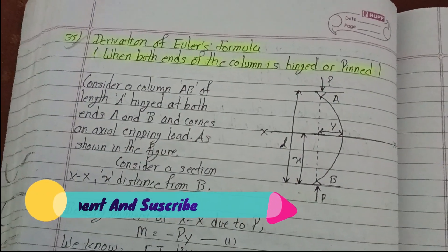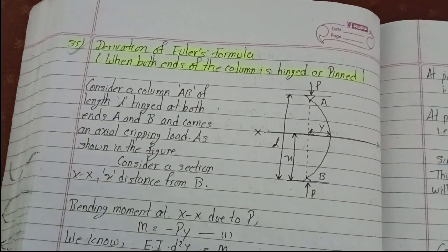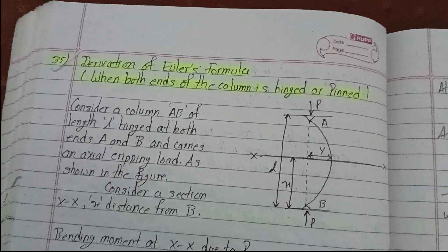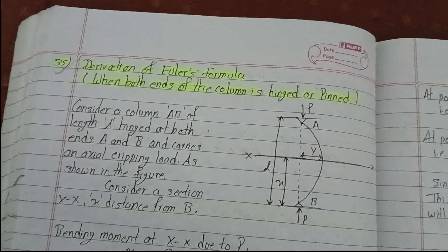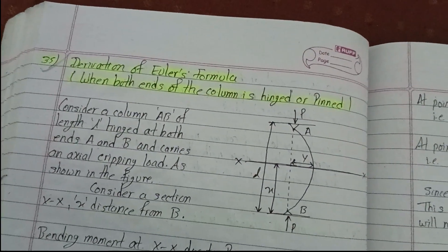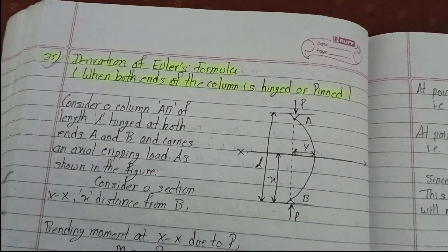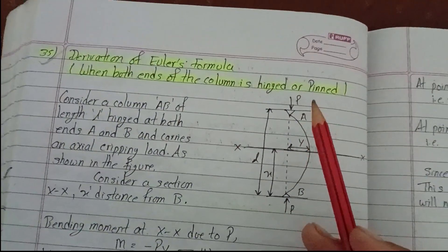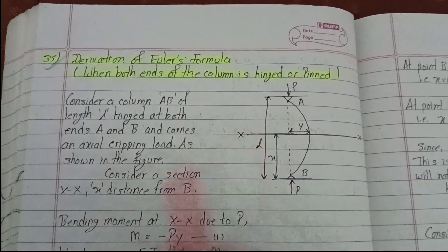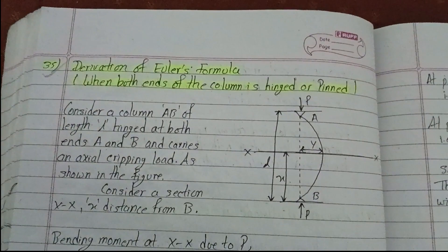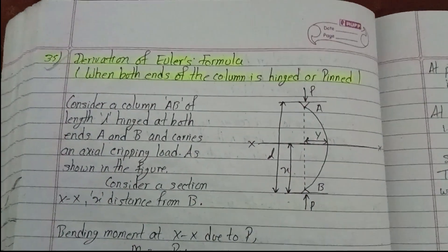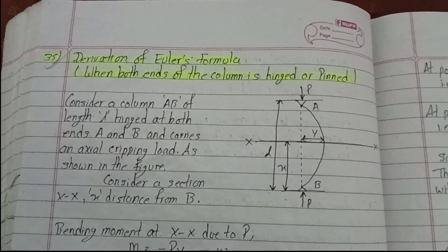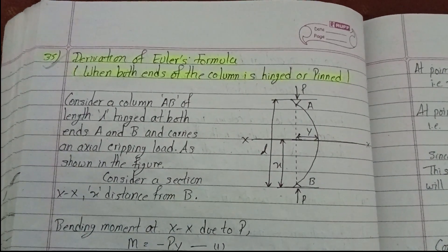Hello everyone, welcome back to our channel. This is an important video on the derivation of Euler's formula, an important question for semester exams in mechanics of structures. This derivation covers the case when both ends of the column are hinged or pinned. Please subscribe to the channel and comment with any questions you have.